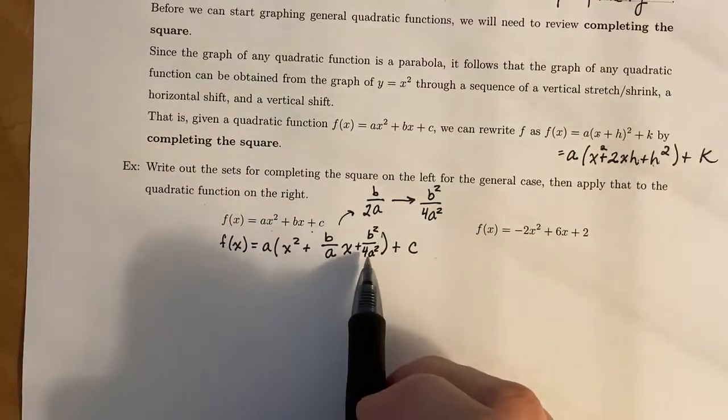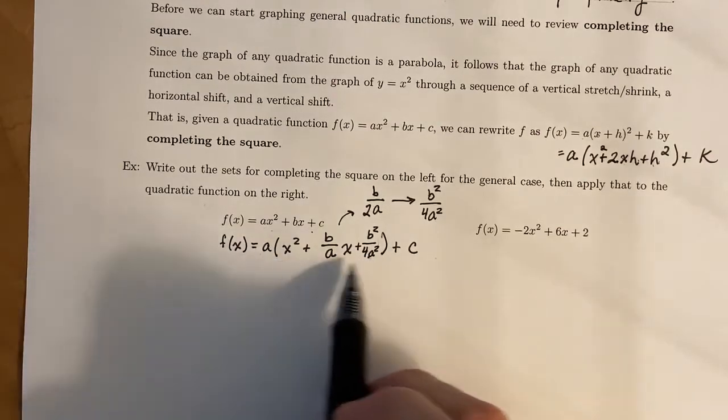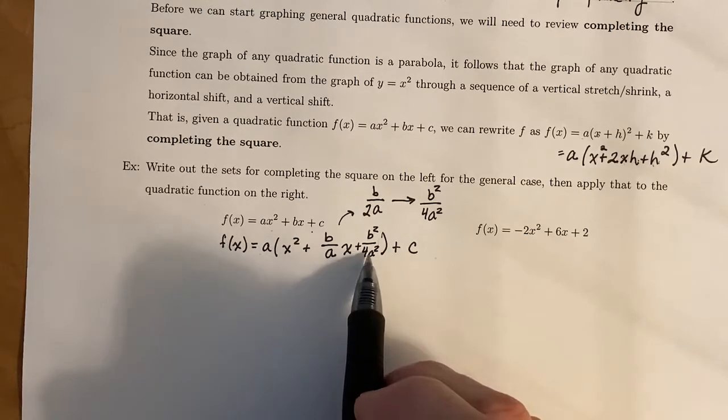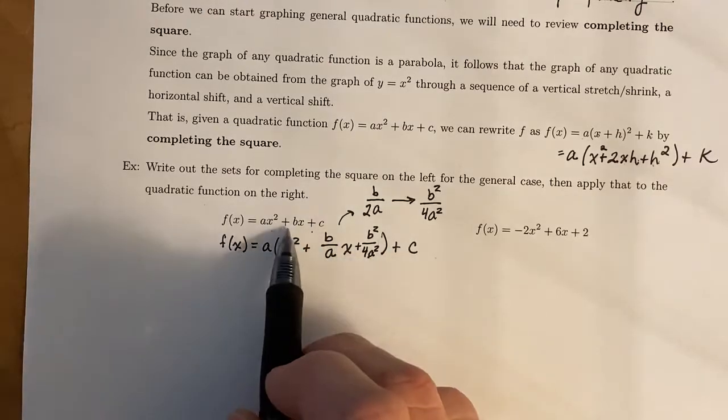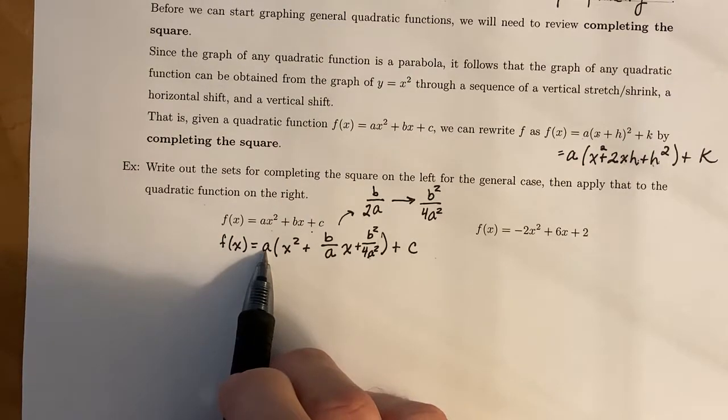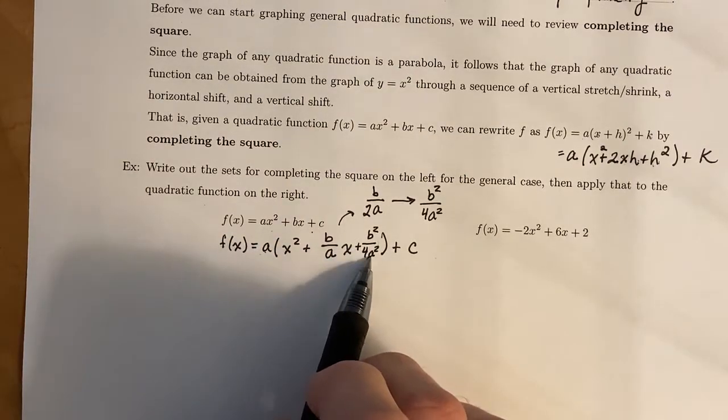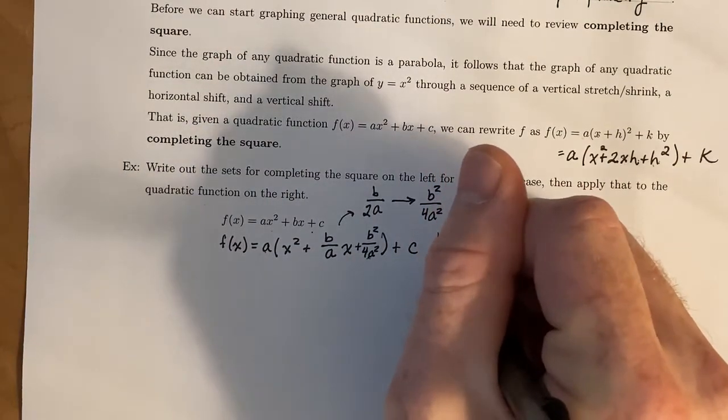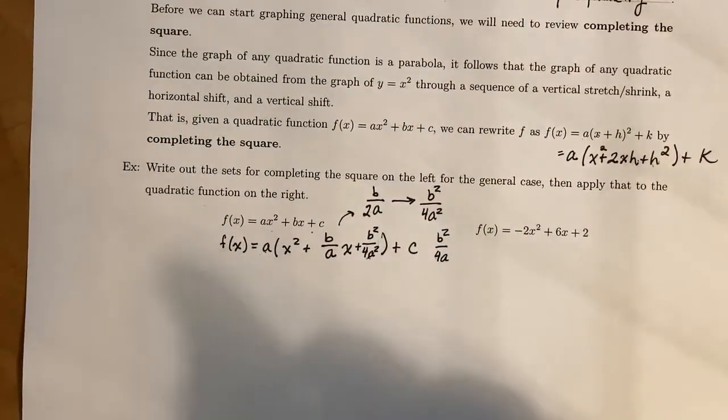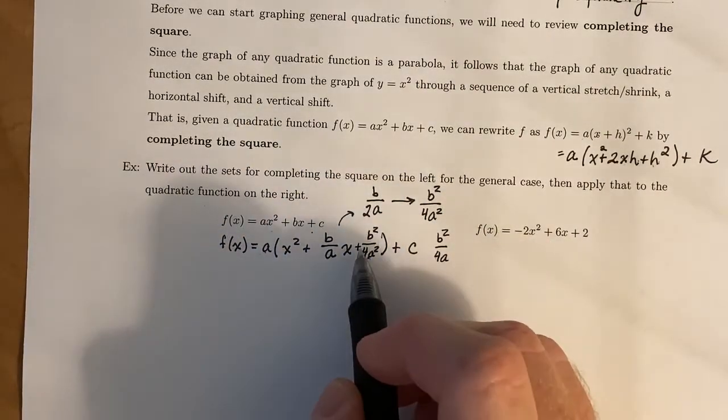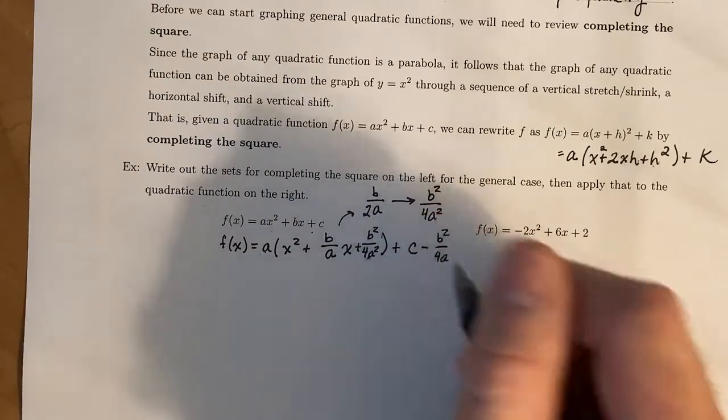Now, by adding only this thing, we fundamentally changed our function. And so we have to subtract something to make it the same function we started with. If you were to distribute this a to this term right here, you would get b²/4a. Now, since we added it here, we have to subtract it there.